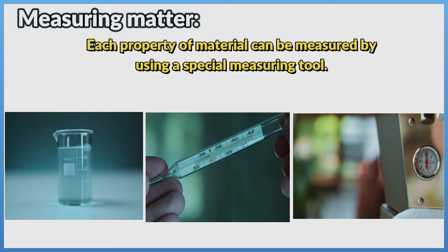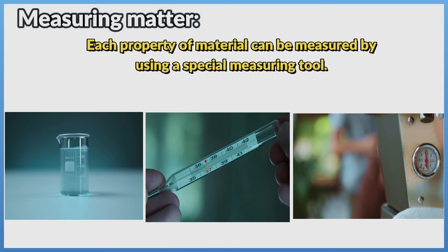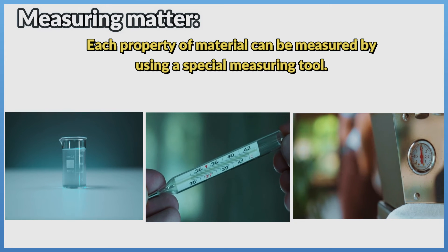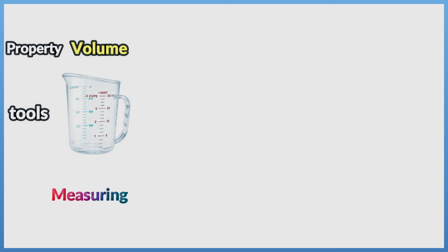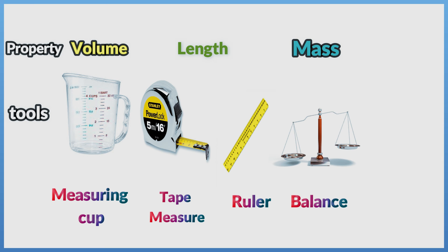Measuring matter: each property of material can be measured by using a special measuring tool. Tools and their properties: Volume is measured with a measuring cup. Length is measured with a tape measure or ruler. Mass is measured with a balance. Temperature is measured with a thermometer.